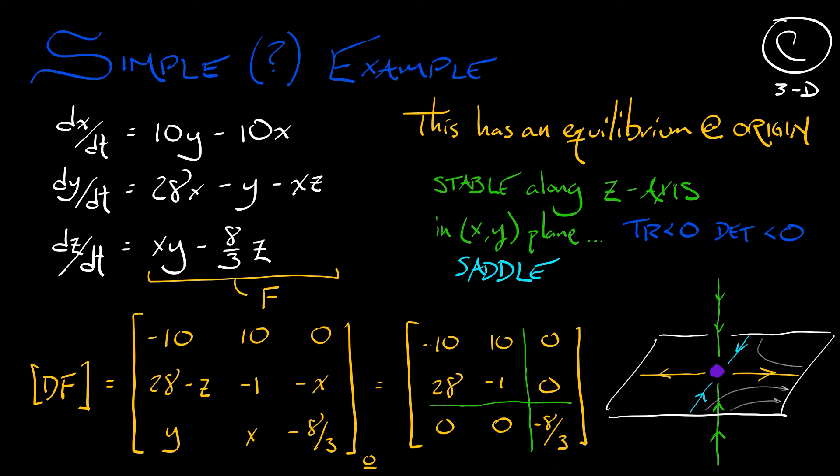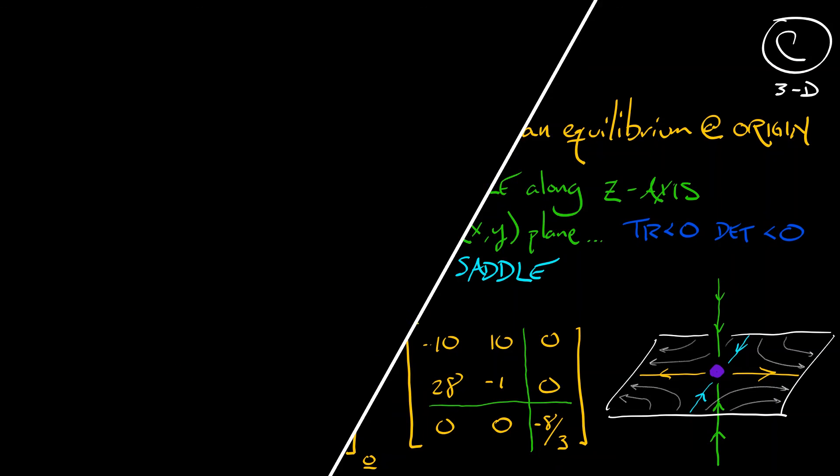So we can get sort of the local picture of what is going on with these linearized dynamics. Okay, now that's a weird example, but maybe remember that. We might see that again someday. Okay, let's move on and discuss stability.